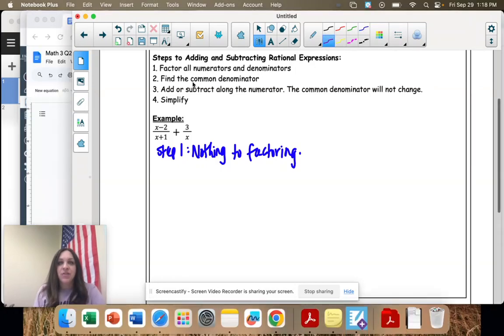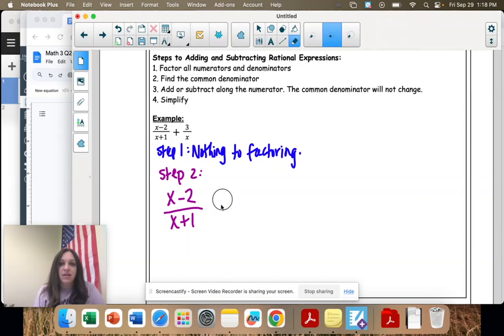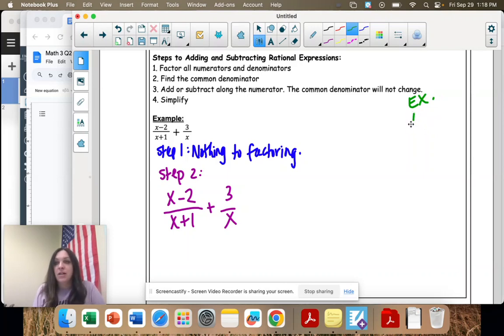Step two, find the common denominator. We have to think back to fractions from elementary school. When the denominators are not the same, you have to find one that makes them the same. So I'm going to do another example from elementary school.